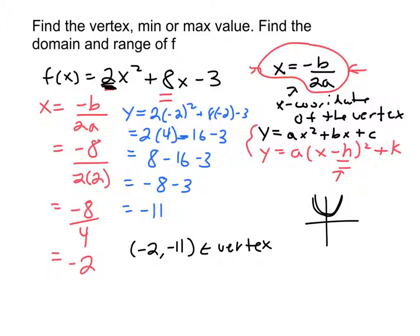Well, if it's positive, it goes this way, right? And if the term out front, a, is negative, it goes this way. So the vertex will be a min if a is positive. In this case, a is positive. So the vertex...